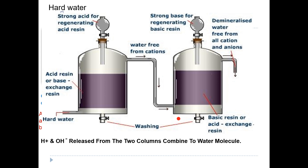Eventually the resin gets exhausted — all the H+ ions are replaced by cations, and all the OH– ions from the resin are replaced by anions. The step to restore the resin is called regeneration. For the cation exchanger, regeneration is done by passing an acid solution like HCl — the H+ ions replace all the other cations. For the anion exchanger, a strong basic solution is added so that OH– ions replace all the anions.